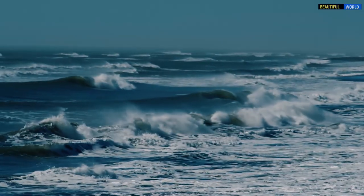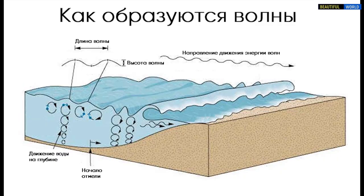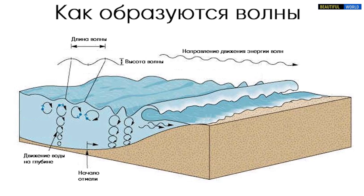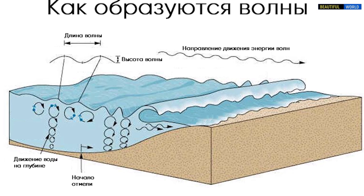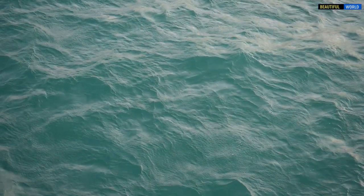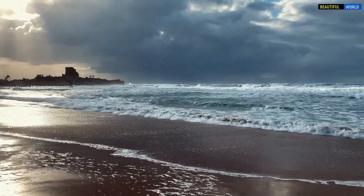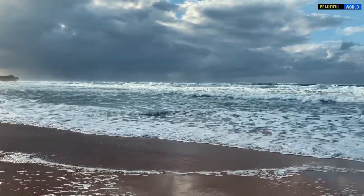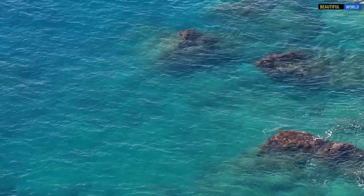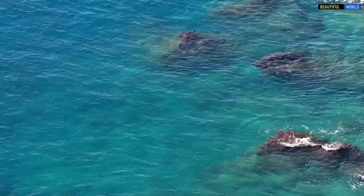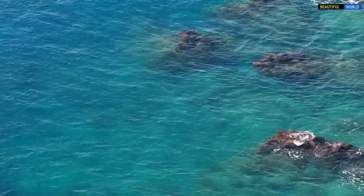Давайте теперь разберёмся, как вообще образуются волны. За их формирование отвечают два физических механизма: сила тяжести и сила поверхностного натяжения. Когда часть воды поднимается, сила тяжести старается вернуть её обратно. А когда опускается — вытесняет соседние частицы, которые тоже пытаются вернуться обратно. Силе поверхностного натяжения всё равно, в какую сторону прогнута поверхность жидкости — она действует в любом случае. В результате частицы воды колеблются подобно маятнику, от них возбуждаются соседние участки и возникает поверхностная бегущая волна.